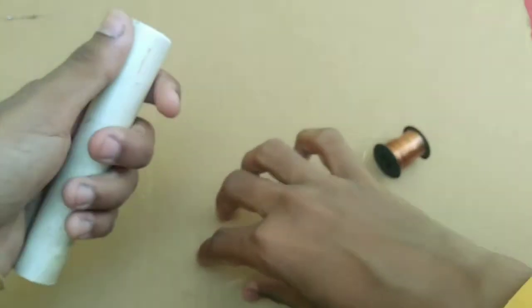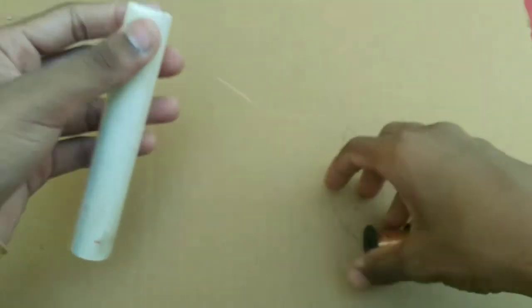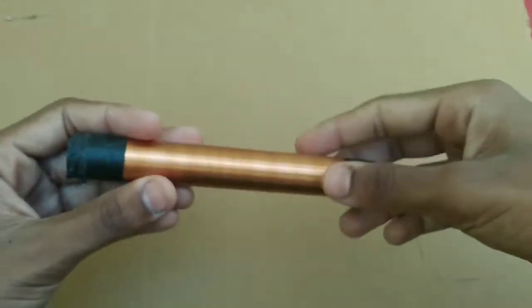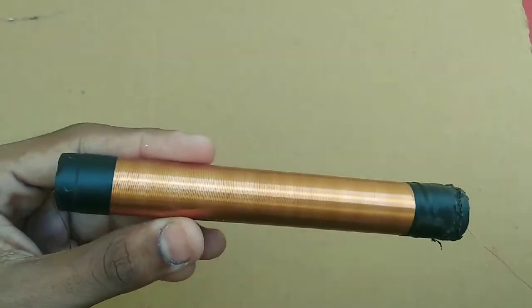Take the PVC pipe and copper wire to make the coil. Wrap it carefully and continue until the coil is complete.